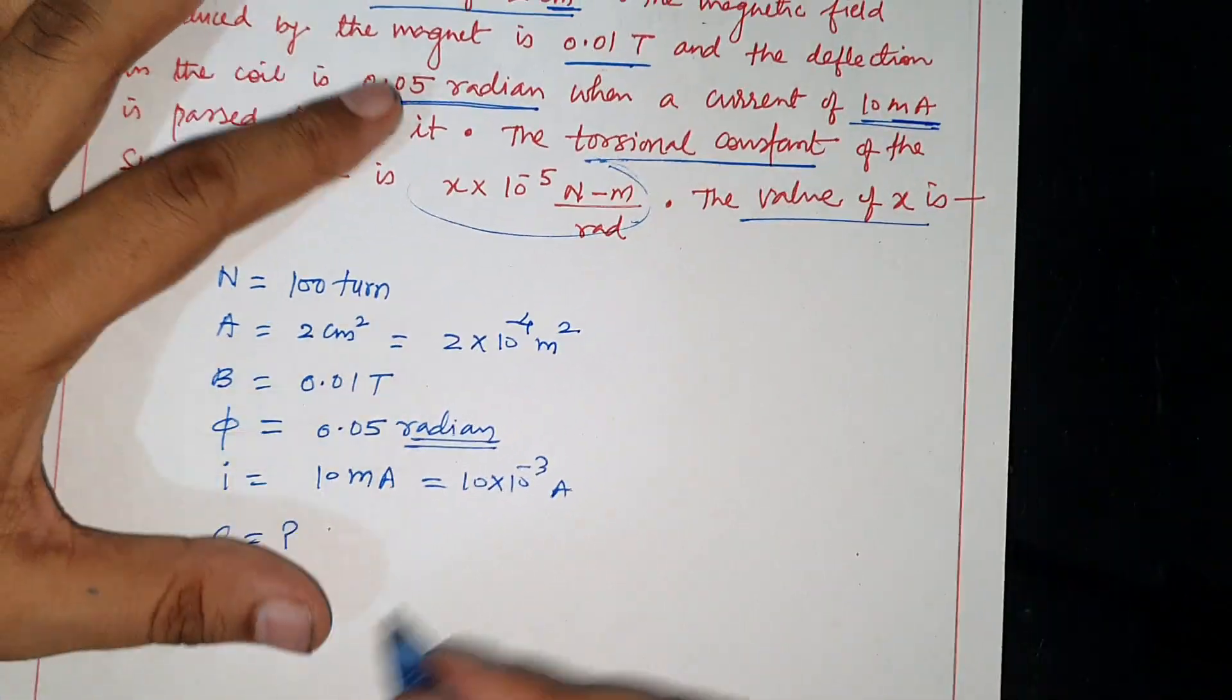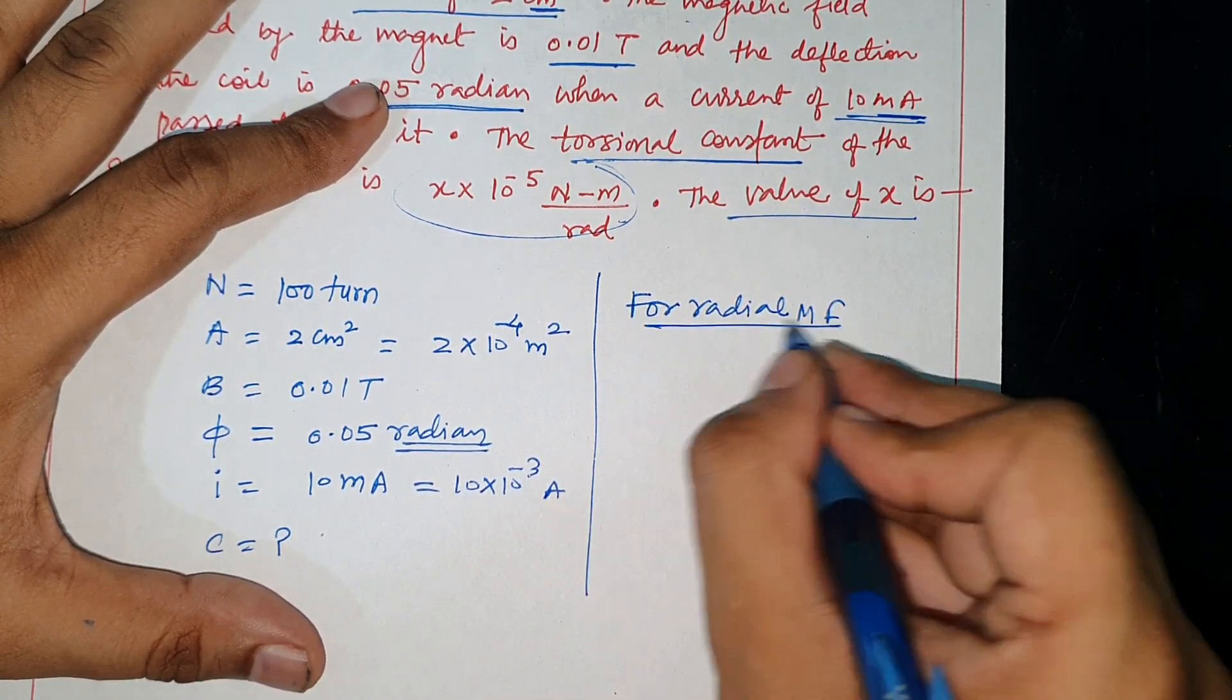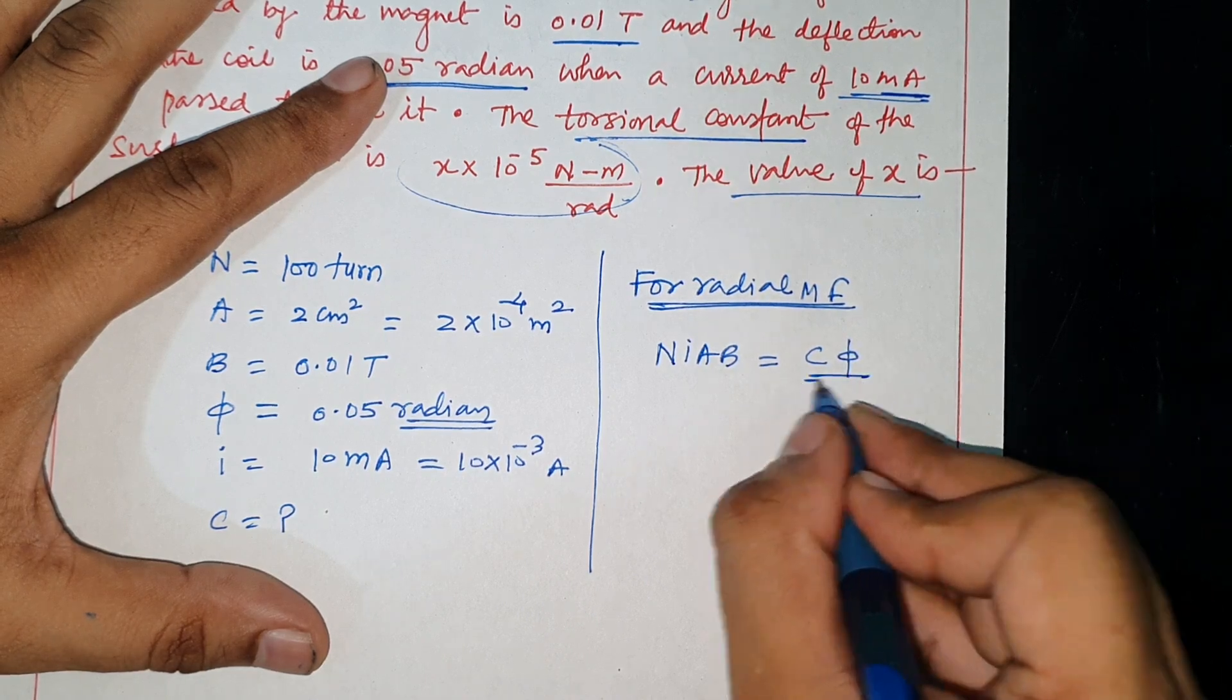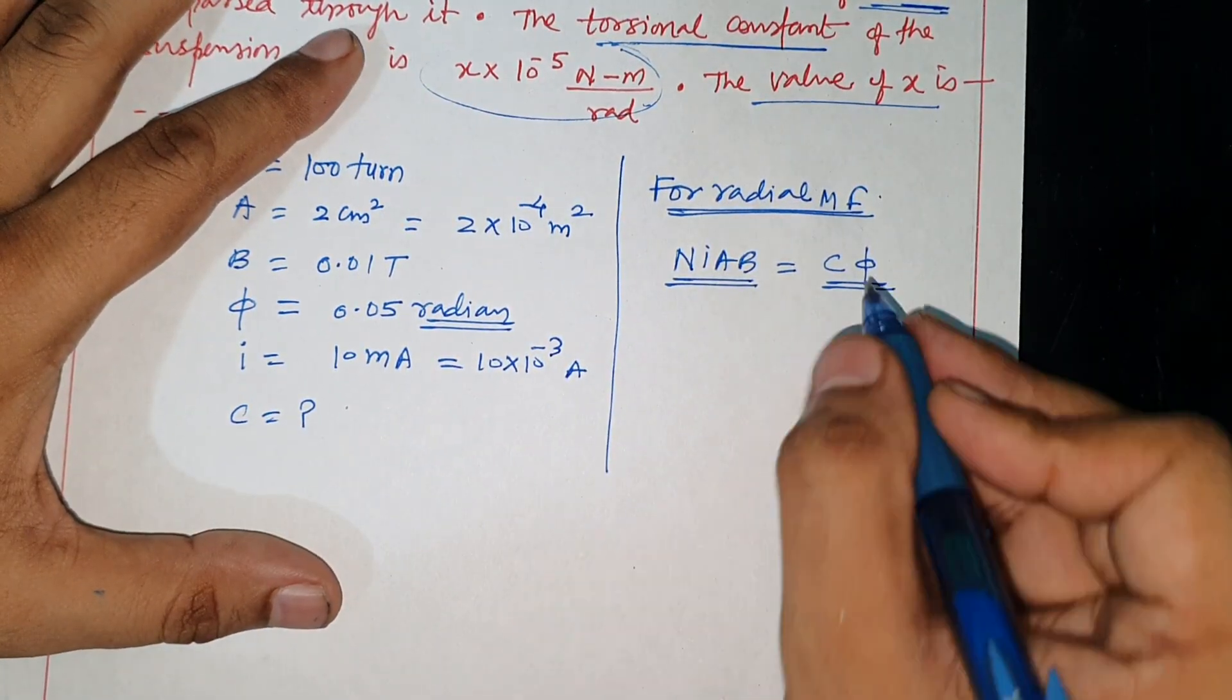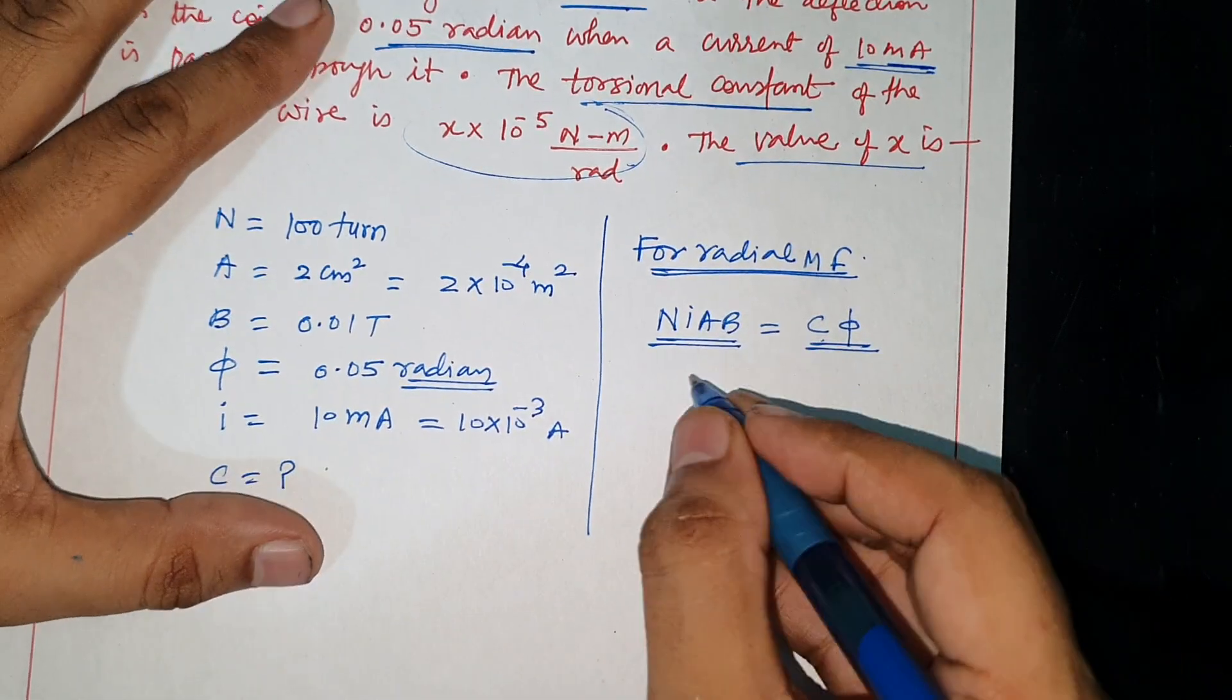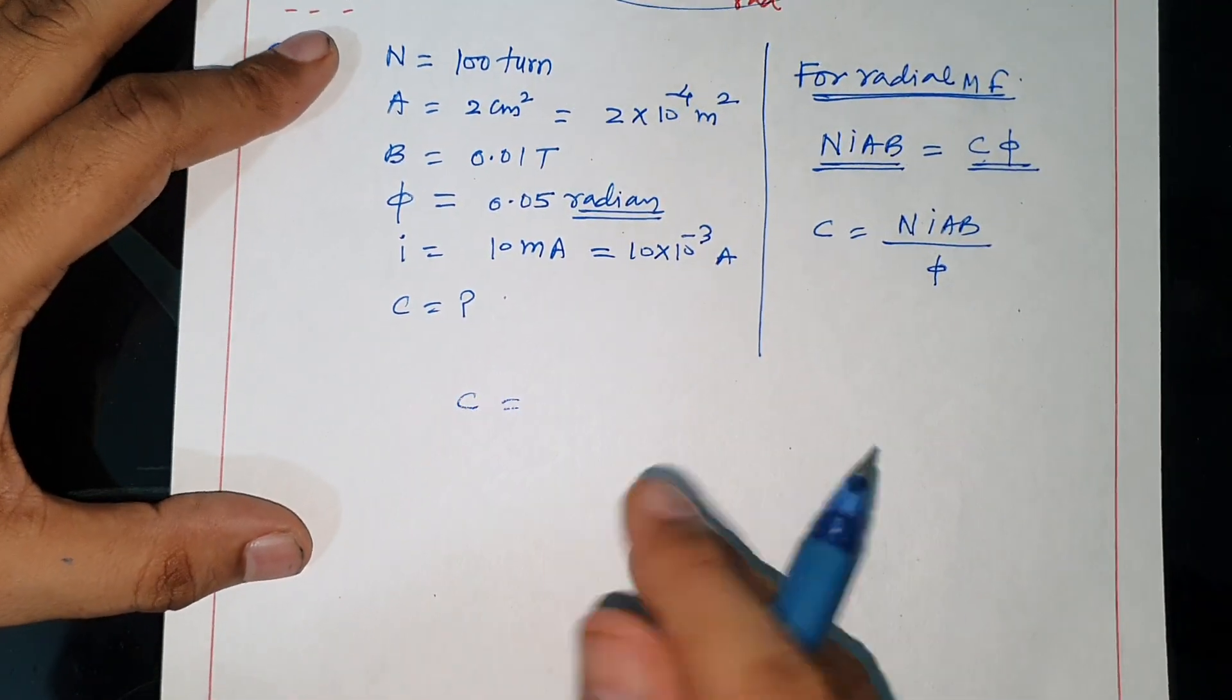Torsional constant C is being asked. For radial magnetic torque, the restoring torque - the torsional constant C, this is what's being asked. The value of C is N I A B over phi. Just put the values and find C.